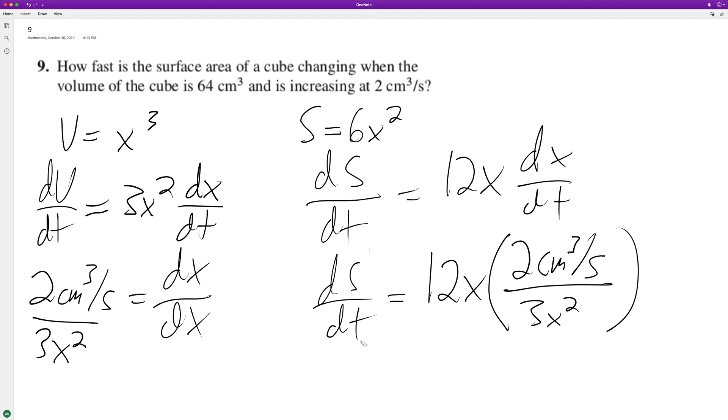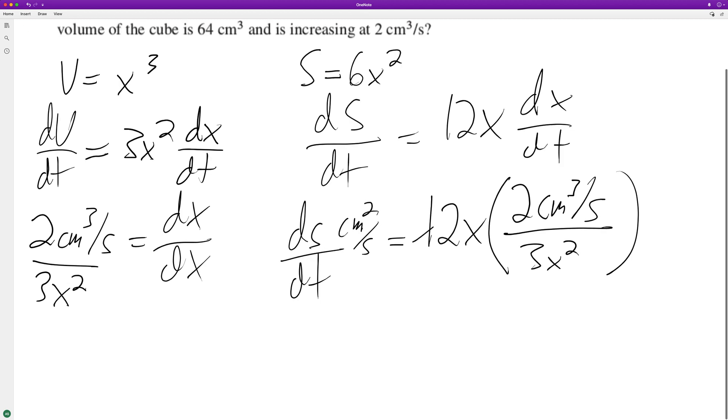And dS/dt is equal to... dS/dt is equal to centimeters squared per second. So this becomes a four.